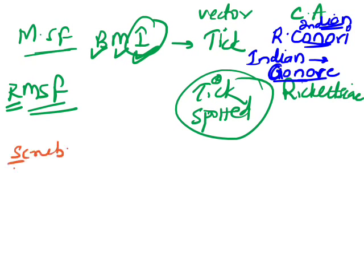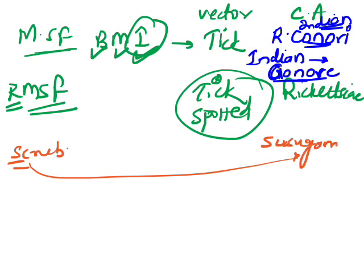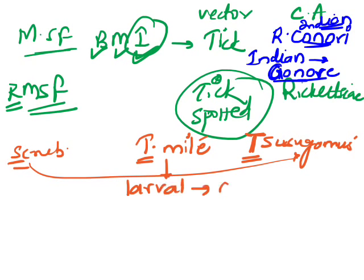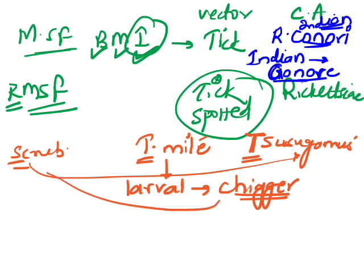Scrub typhus — we already saw the causative agent is tsutsugamushi. If you add a T to it, which is the actual spelling, that gives you the vector: Trombiculid mite. To be specific, it is the larval form of the Trombiculid mite — the chigger — that causes the infection. That is why scrub typhus is also called tsutsugamushiosis.